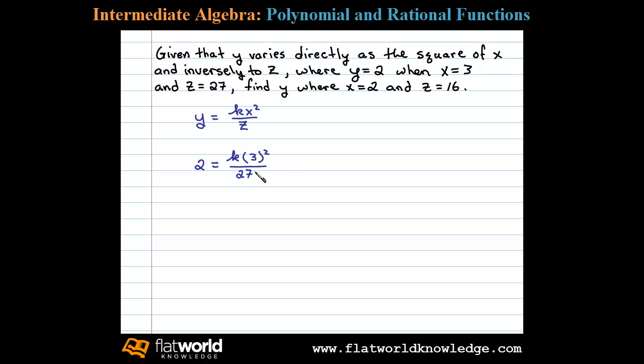Here we have 2 equals k times 9 over 27. Dividing out a 9 we're left with 2 equals k over 3. And then multiplying both sides by 3 we have 6 equals k.